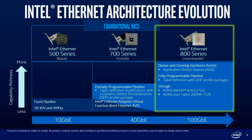We're introducing the 800 series, and the codename of the main controller is Columbiaville. Adding additional capability with DDP and the fully programmable pipeline, additional capabilities like Application Device Queues which will allow us to route traffic directly into applications, and additional RDMA support — not only iWARP but RoCEv2. Last week at the Storage Developer Conference, we demonstrated NVMe over Fabric with both NVMe over RDMA and NVMe over TCP.